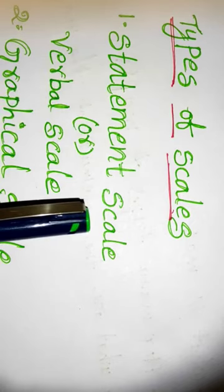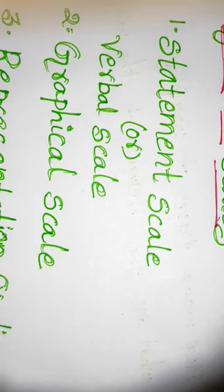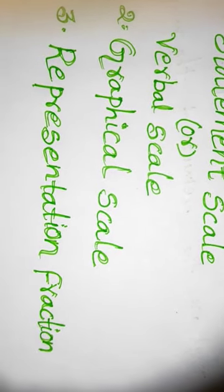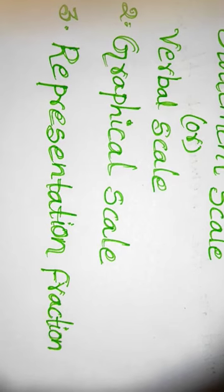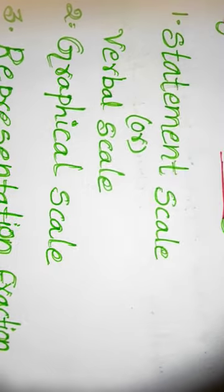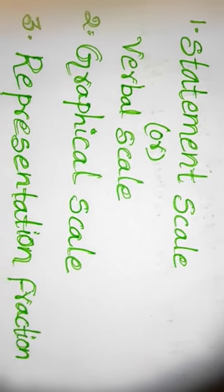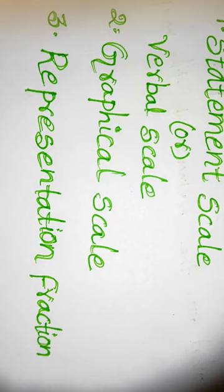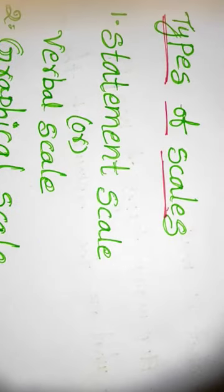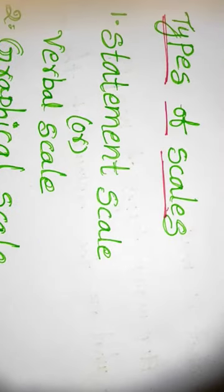The third component of the map is the scale. The distance between two places on the map corresponds to the same two places on the ground. For this purpose, we select the scale. Types of scales: the first is the statement scale or verbal scale, the second is the graphical scale, and the third is the representation fraction.